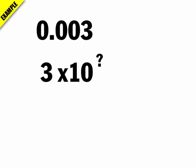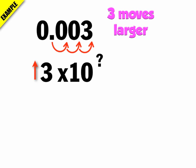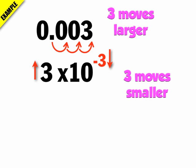Now let's look at a decimal: 0.003. I want to turn that into 3 times 10 to the something. This time I'm going to move the decimal to the right instead of the left, making 0.003 larger to get to 3. That's three decimal moves — three powers of 10 larger for the mantissa — so the exponent has to be three powers of 10 smaller, giving us 10 to the negative 3.